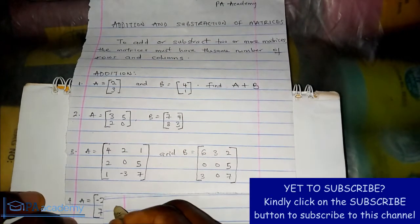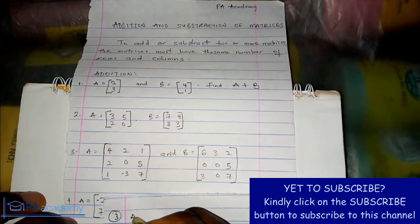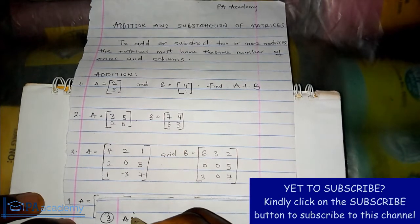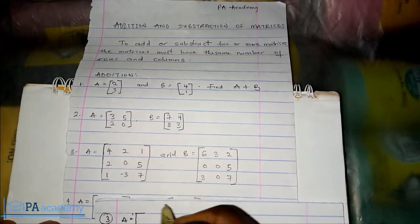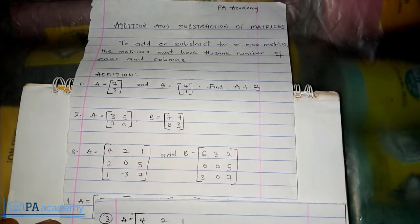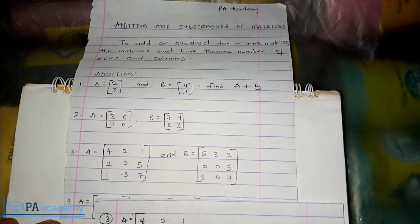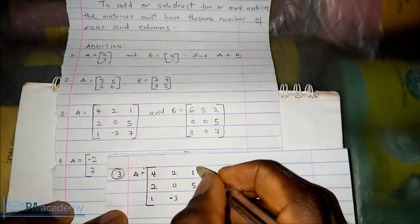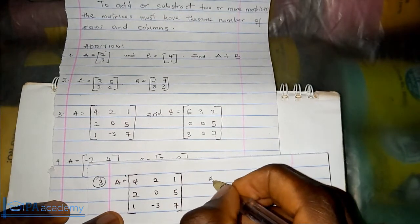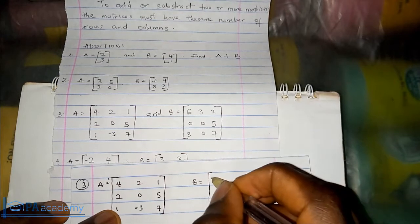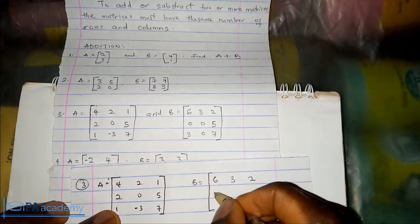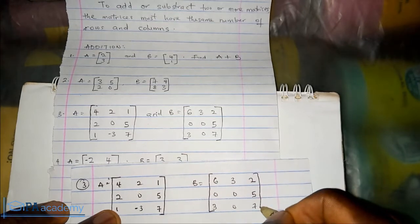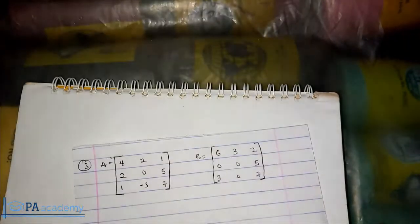Welcome back for example 3. We have a 3 by 3 matrix. For matrix A, the first row is 4, 2, 1; the second row is 2, 0, 5; the third row is 1, negative 3, and 7. For matrix B, the first row is 6, 3, 2; the second row is 0, 0, 5; the third row is 3, 0, 7. We are going to be adding these two matrices.